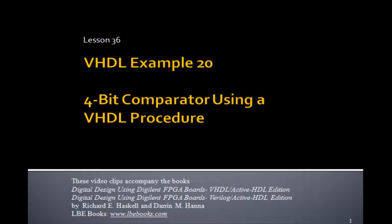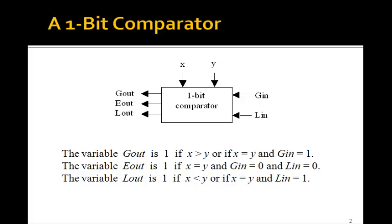This is Lesson 36, which is VHDL Example 20. In this lesson we're going to design the 4-bit comparator that we designed in Lesson 35 by cascading four 1-bit comparators. But in this case we're going to use a VHDL procedure.